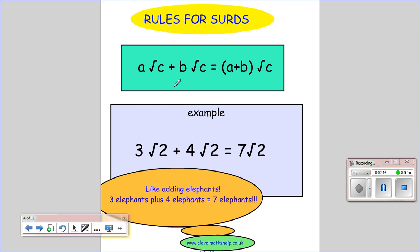The third rule we're going to look at is the adding elephants rule. If we have so many root Cs plus so many other root Cs, we have the total number of root Cs. So 3 root 2 plus 4 root 2 would give me 7 root 2.